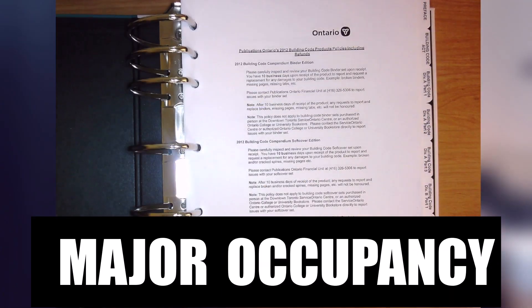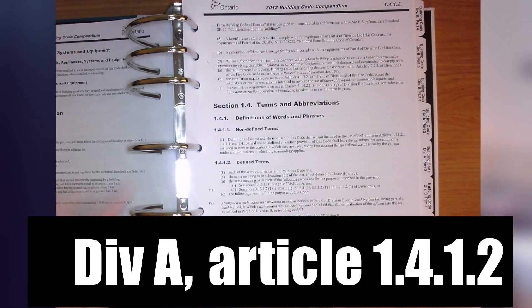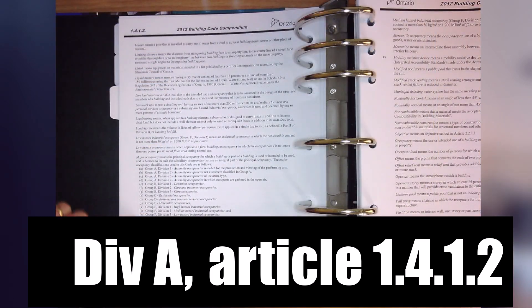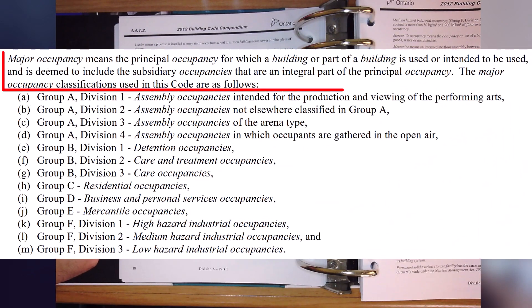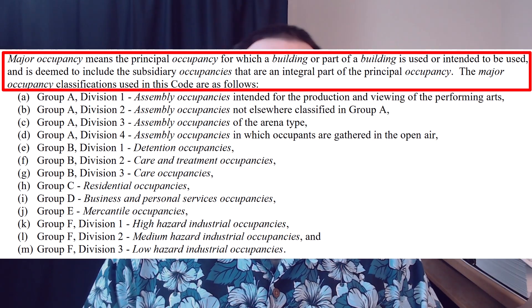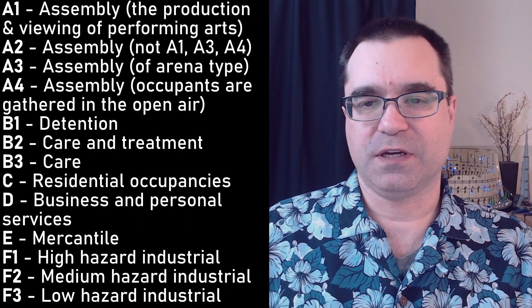The words 'major occupancy' are specifically defined in the Ontario Building Code. If we go to Division A, Article 1.4.1.2, Defined Terms, we would find the following definition: 'Major occupancy means the principal occupancy for which a building or part of a building is used or intended to be used, and is deemed to include the subsidiary occupancies that are an integral part of the principal occupancy.' All 13 major occupancy classifications are listed there.